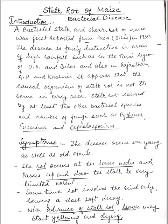The disease occurs on young as well as old plants. The rot occurs at the lower nodes, starting from the lower nodes and passing up and down the stalk to a very limited extent. Sometimes the rot involves the rind only, causing a dark soft decay.